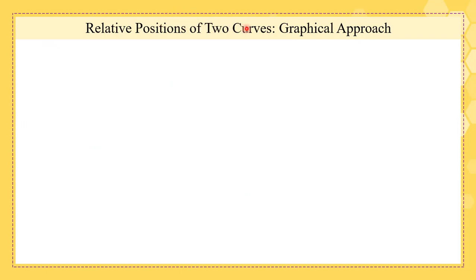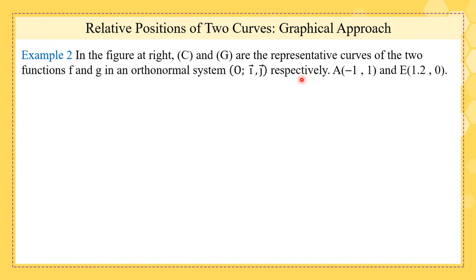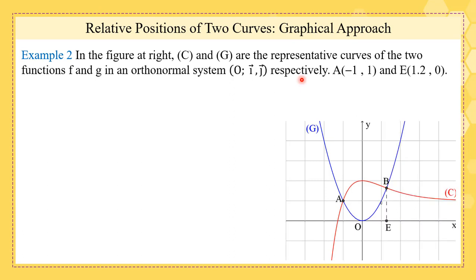Now we're going to see the relative positions of two curves graphically. We have a figure where the red curve is C and the blue curve is G. They intersect at points A and B. We know that E is the point whose abscissa is 1.2 and whose ordinate is 0, so the abscissa of B is 1.2.